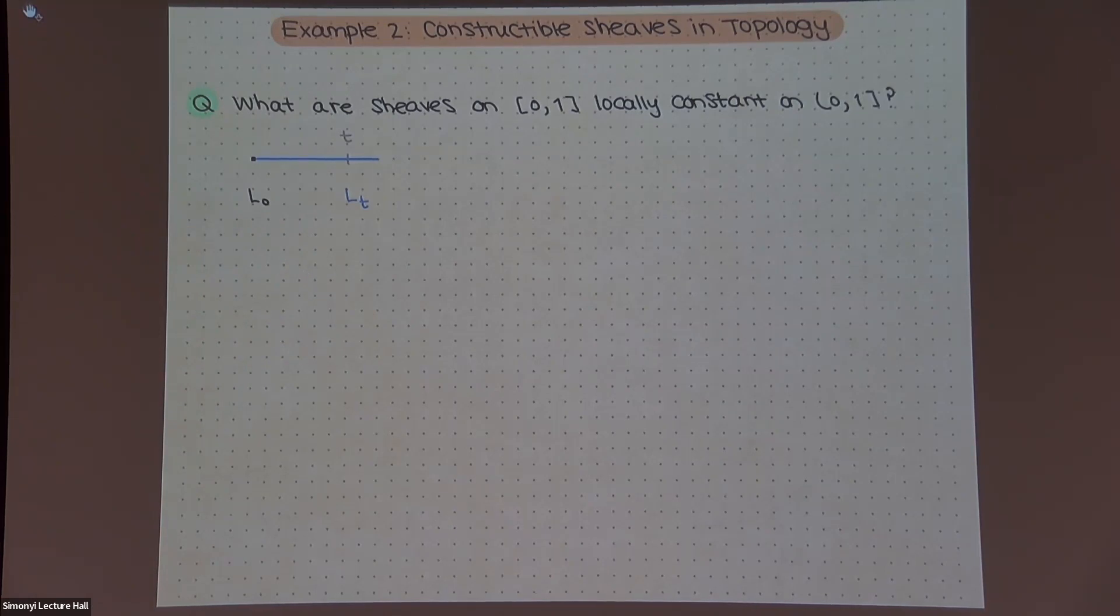But this, you know, this is not a decomposition into two open pieces, it's a closed piece and an open piece. So it doesn't mean they're locally constant everywhere. Well, this piece is contractible, and this piece is contractible. So by the above theorem, what I need to do is assign a vector space to each piece, and then maybe there's some more data.